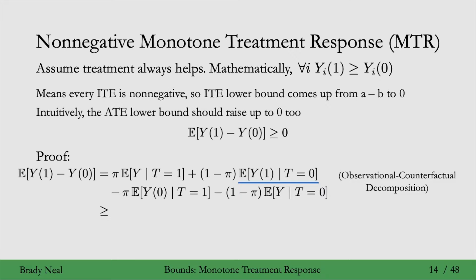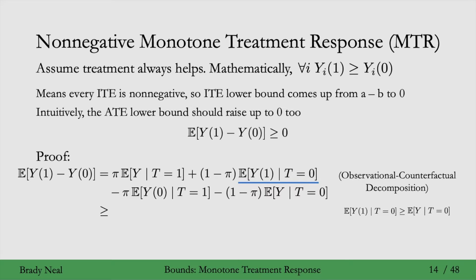We know that the expected Y1 is greater than or equal to the expected Y0 because of the monotone treatment response assumption. Then using consistency, we have that the term on the right of the inequality is just the expected value of Y given T equals 0. That gives us a lower bound on this counterfactual quantity in terms of an observational quantity, so we plug that in.